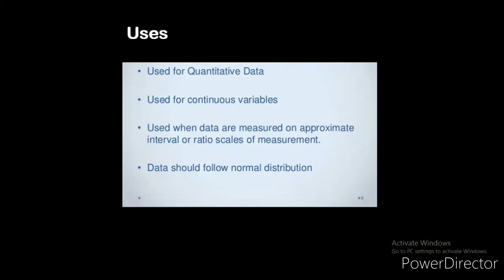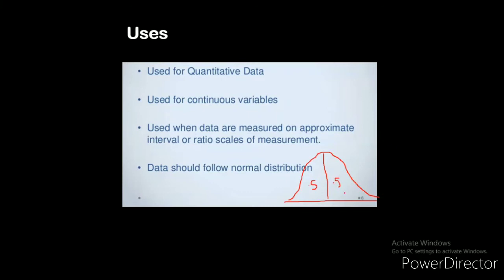The uses of parametric statistics: it is used for quantitative data, also used for continuous variables, and the data follow the interval or ratio scale of measurement. Also, data should follow the normal distribution. Normal distribution is when the population is normally distributed with a fixed mean. This is the curve, and the mean on each side is 0.5 — that is, fixed and normally distributed. The population mean is equal to positive 1, which is fixed and normally distributed.